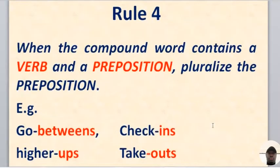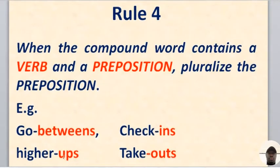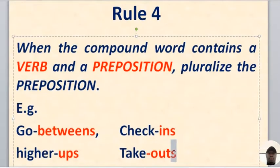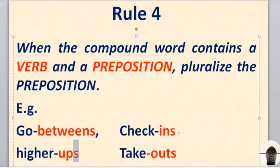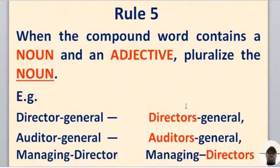Rule four: when the compound word contains a verb and a preposition, pluralize the preposition. For example, go-betweens — go is a verb, between is a preposition. Check-ins — check is a verb, in is a preposition. Higher-ups. Takeouts — this is the American form of takeaway. So if the compound word contains a verb and a preposition, just pluralize the preposition only.